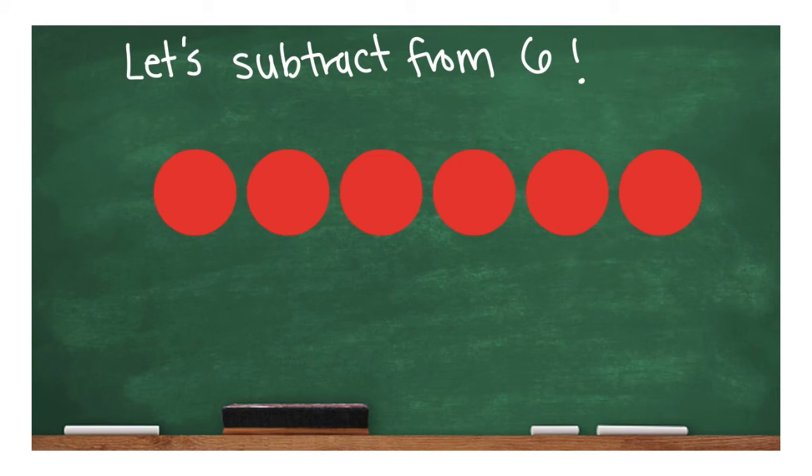And just like we did before with Bruno, make sure you go in order. Start by taking away 0 and then 1 and then 2 and then 3 and then 4 and then 5 and then 6. Record all the ways that you can subtract from the number 6. Go ahead.